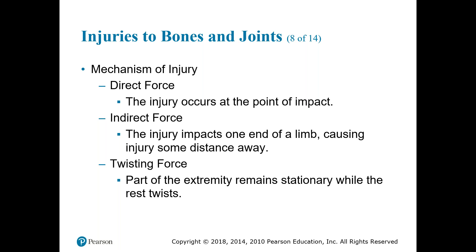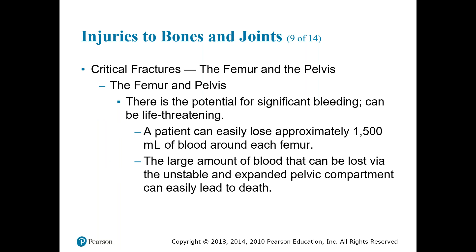Regarding mechanism of injury and force types: we can see different types of force. Direct force is a direct impact — for example, a hockey player getting checked. Indirect force is an impact at one end of a limb causing injury some distance away; Dominique landing on her left wrist could transfer energy up to the left shoulder, resulting in both wrist and shoulder pain. Twisting force occurs when part of an extremity remains stationary while the rest twists — seen most predominantly in sports-related injuries such as football, hockey, and motor vehicle accidents.